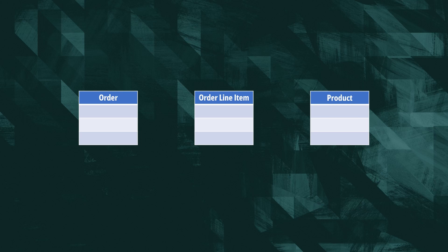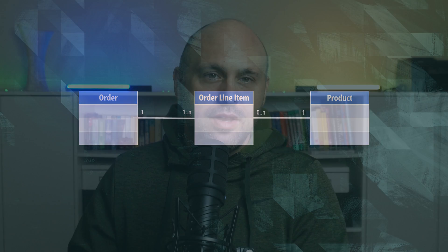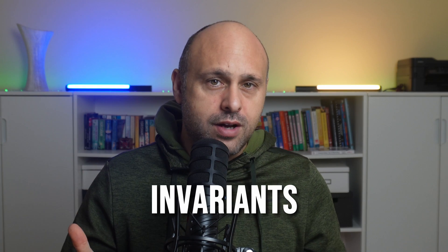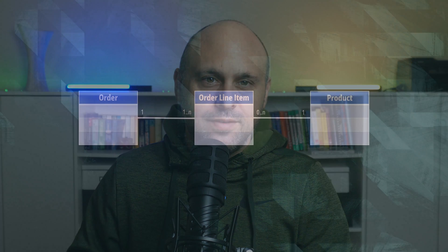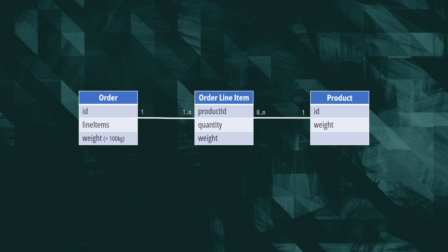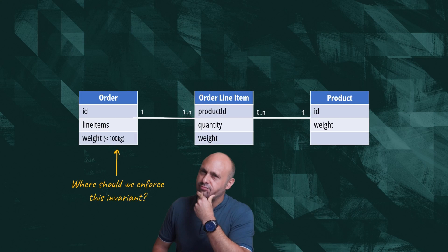For example, in the context of an eShop, an order contains one or more line items. Each line item defines exactly one product. These objects and relationships might be subject to invariants, which, in simple words, are rules that should never be broken. For instance, we could have a rule enforcing that an order cannot exceed 100 kilos.